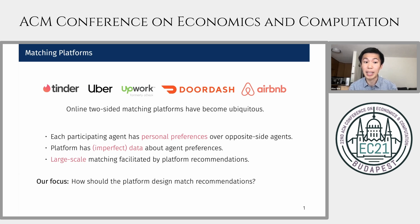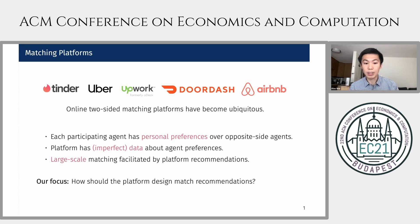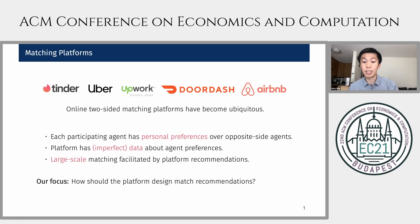These platforms also have many elements in common. Each participating agent often has heterogeneous personal preferences over agents on the opposite side. The platform has imperfect data about agent preferences, and the platform facilitates matching at a large scale through recommendations. Our focus will be on designing matched recommendations in the face of uncertainty about agent preferences and strategic agents.